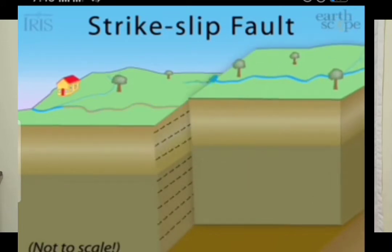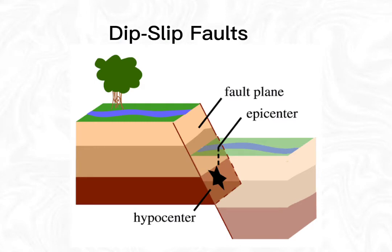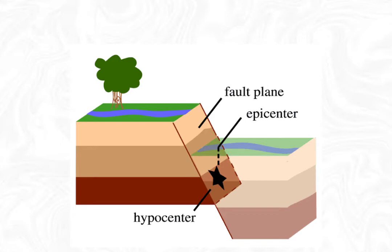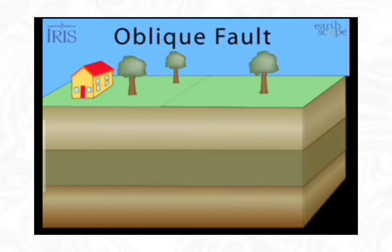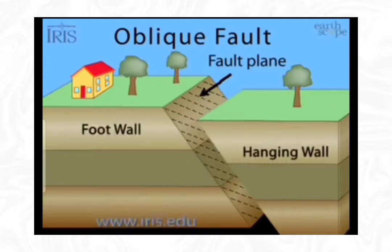In strike-slip faults, the fault plane is usually vertical, so there is no hanging wall or foot wall. The forces created in these faults are lateral or horizontal. Fourth is the deep slip fault, in which the upper block above the fault plane moves up and over the lower block. This type of faulting is common in areas of compression. And the last one is oblique slip faults, which shows both deep slip and strike-slip motion. Those are the five types of faults.